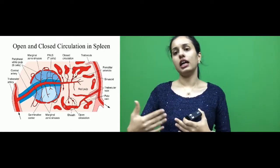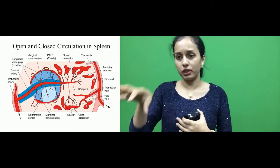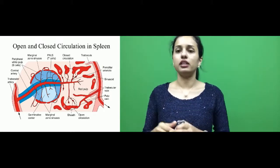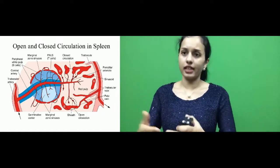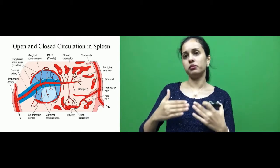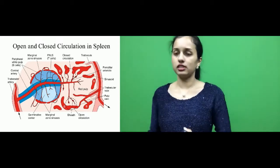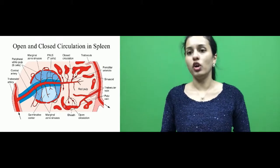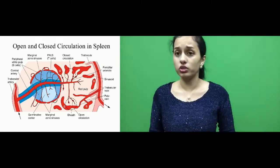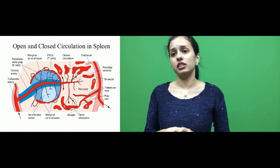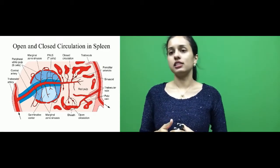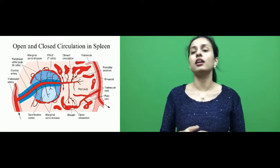These pensillar arterioles later form capillaries. In closed circulation, these capillaries directly enter the venous sinuses — the blood flows from the capillaries into sinuses enclosed by an endothelium. You can see a circle in the picture labeled as closed circulation, where the capillaries from the pensillar arterioles directly enter the splenic sinuses, which are enclosed by the endothelium.